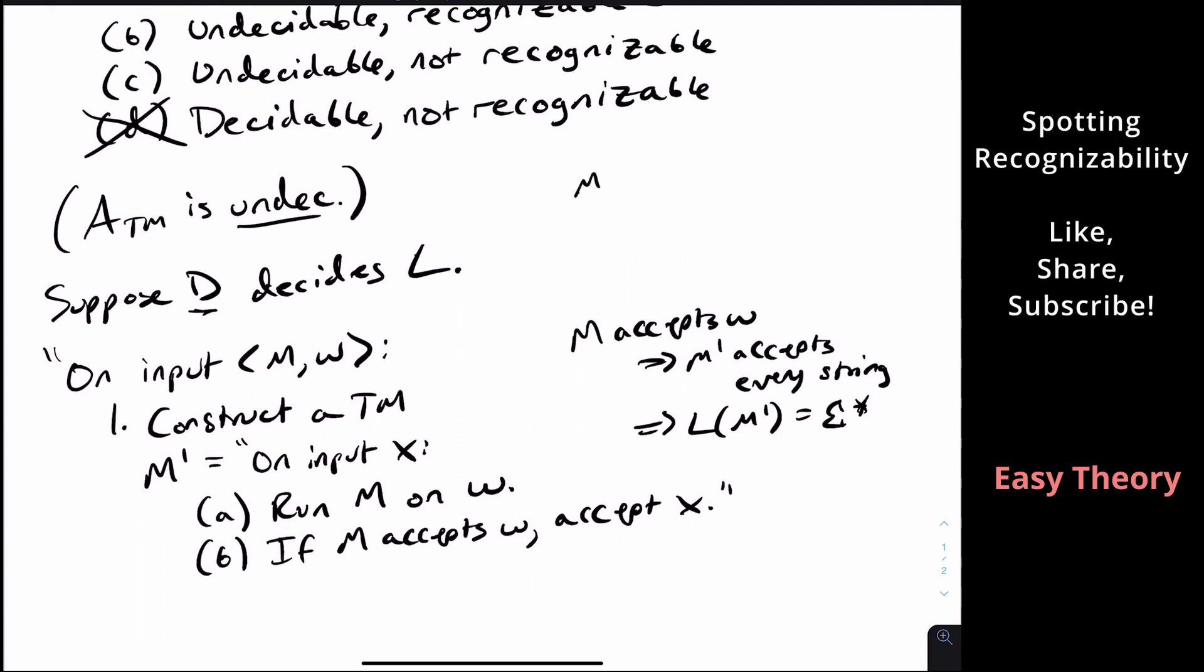But suppose that M does not accept W. Well, in that case, well, what can we determine about M prime? Well, we never will accept x. So M prime does not accept anything. So that means that M prime's language in this case is the empty set. So it doesn't accept anything.